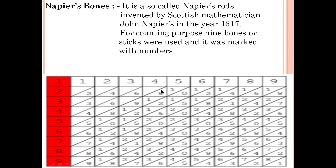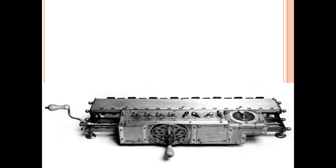You can see the numbers one to nine on both the upper and lower parts of the sticks. You can place any number combination to perform calculations. Napier's Bones was also one of the early calculating devices.